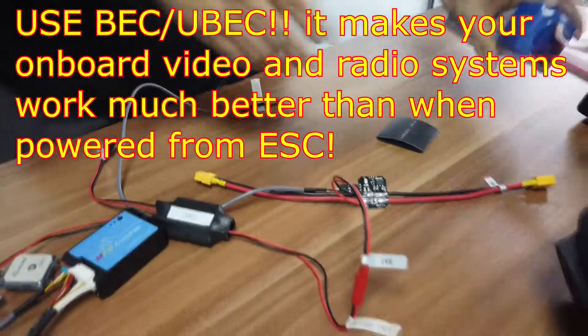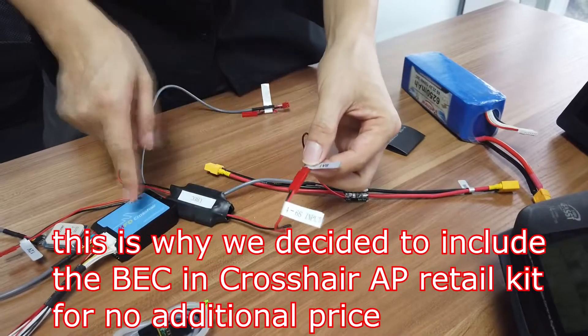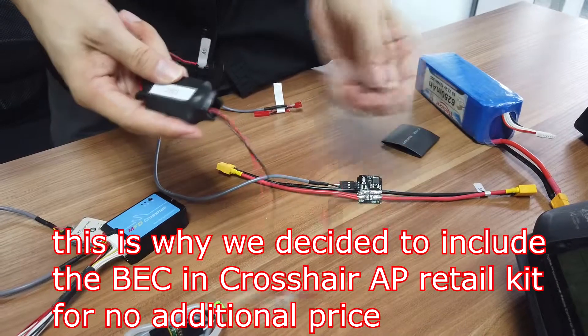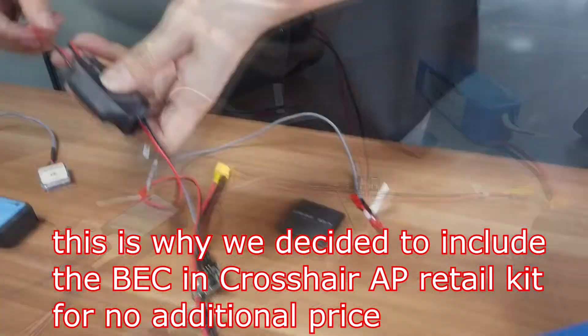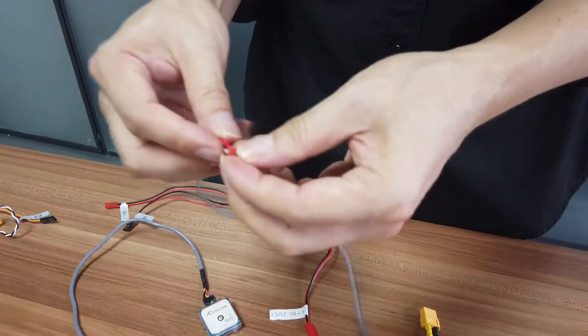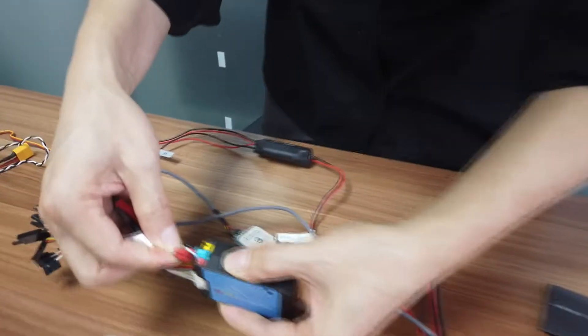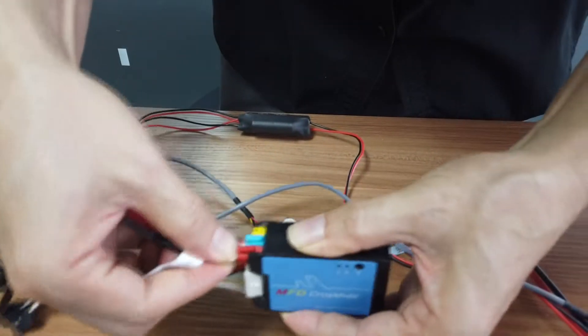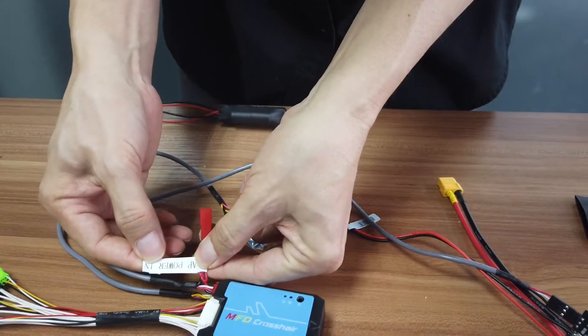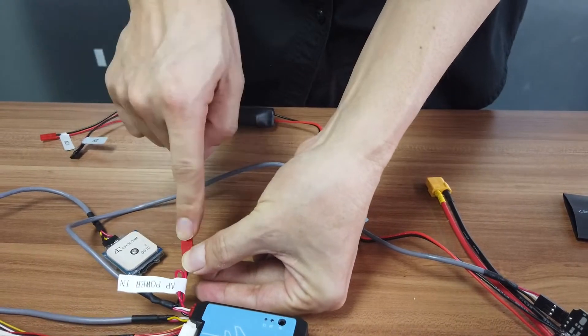So once you connect the battery here, this cable will supply 26V to the UBEC. It outputs 12V and 5V. This connector is the power supply connector for autopilot. We connect this red one here. AP power in. So we supply power to the autopilot by this connector.